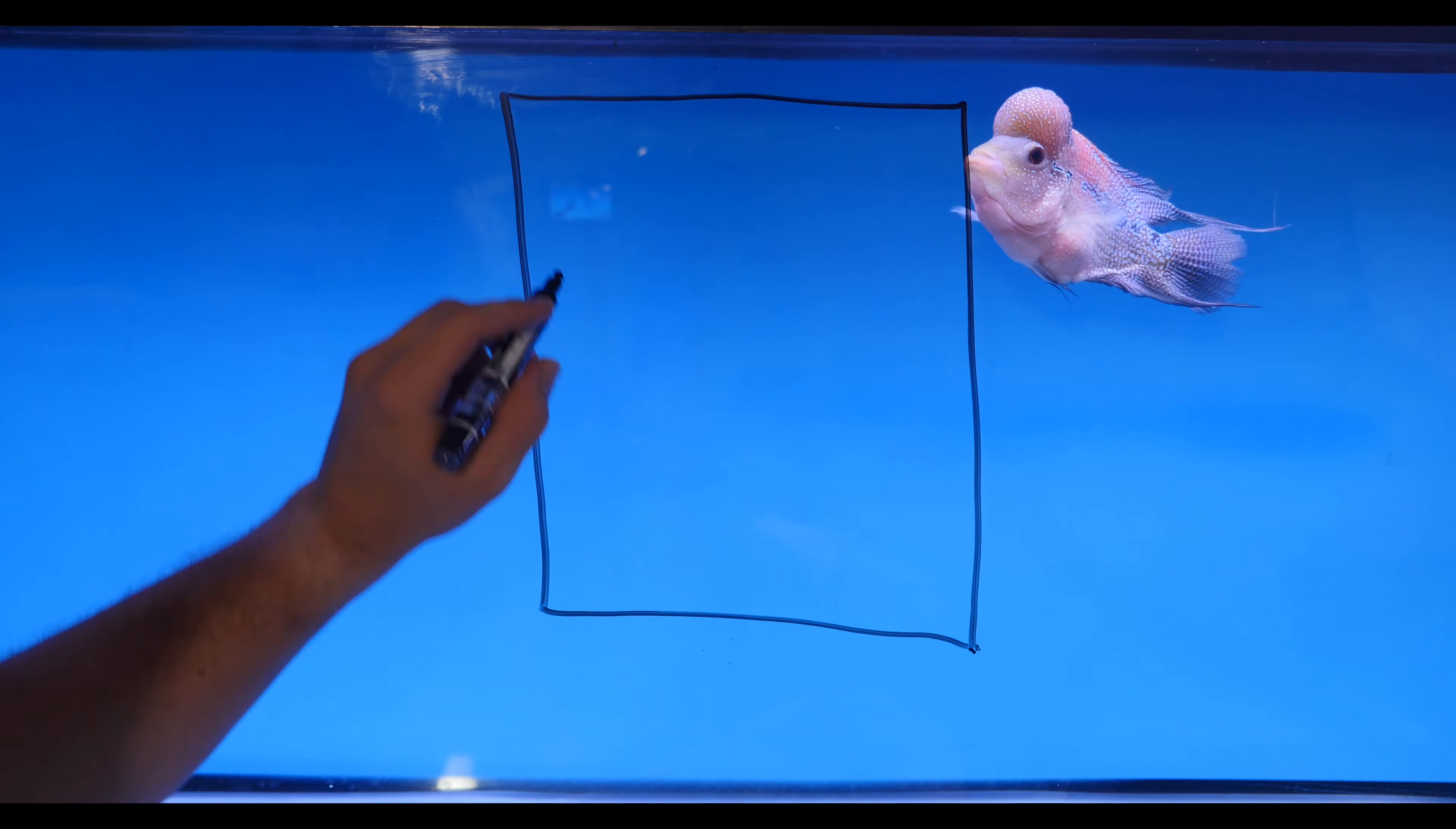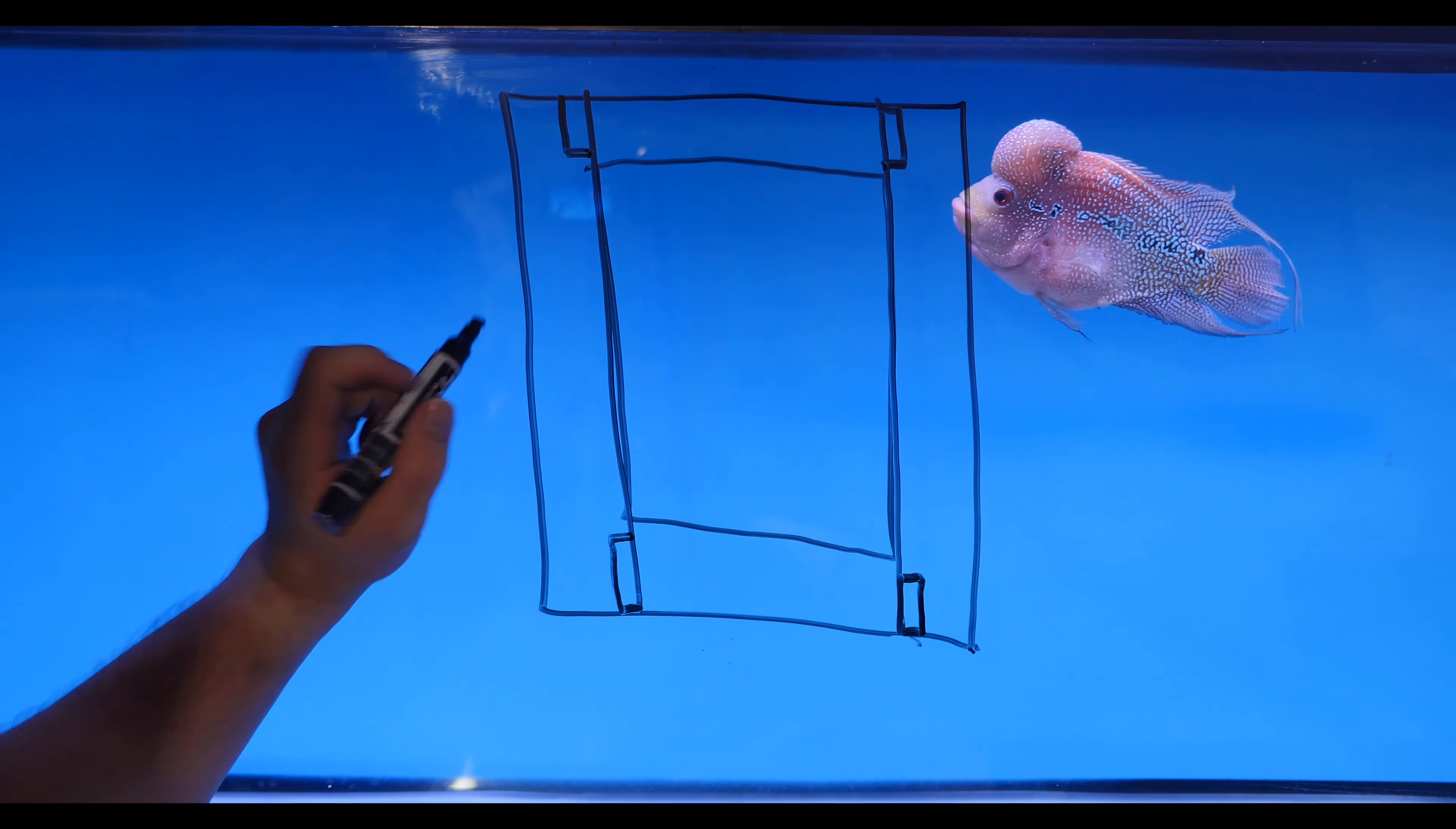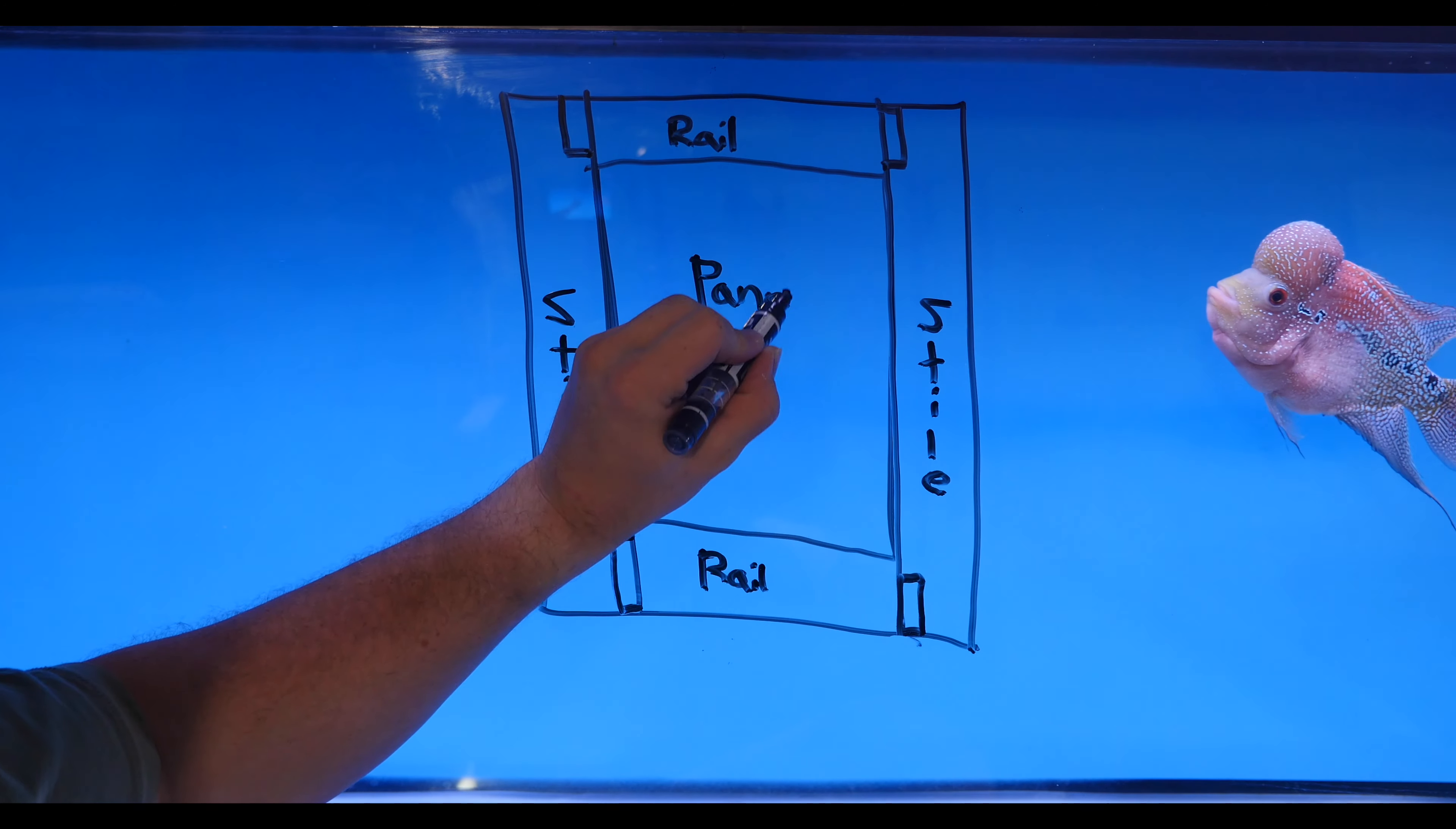Now like I've said before, this is a five-piece assembly, so we have two styles that go on the outside, two rails that go on the inside of the styles, and then one floating panel that goes on the inside of the styles and rails. Also, if you're wondering who my partner is right here, this is Vision.